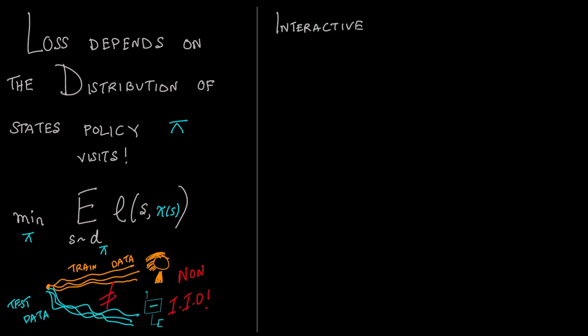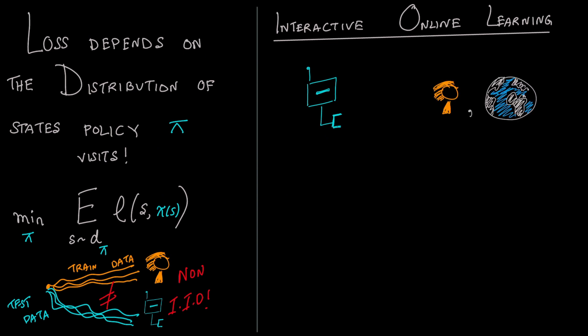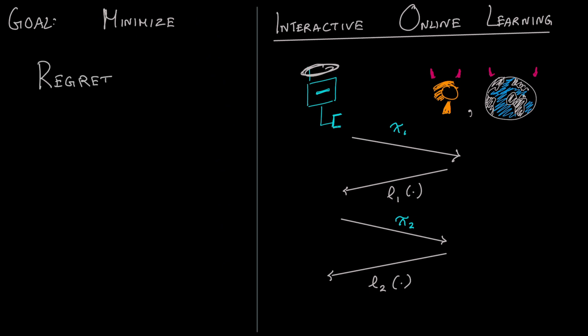Here's where the framework of interactive online learning comes to the rescue. The framework treats learning as a game between the robot and the human world pair. The game begins by the robot playing a policy pi1 and receiving a loss l1. The robot then updates the policy and plays pi2 and receives a new loss l2. And the game continues. There's no real assumption on the loss. It can vary arbitrarily, even adversarially, to thwart the robot.